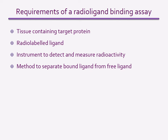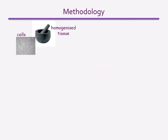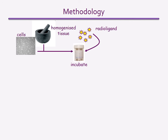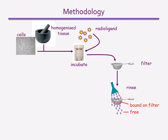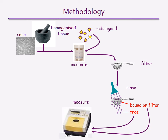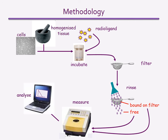The starting point can be either intact cells, homogenised tissue or isolated cell membranes. The sample is incubated for various times with the radio ligand. At the end of the incubation, the sample is passed through a filter. The solution containing the free radio ligand passes straight through, but the ligand that is bound to its target stays trapped in the filter paper. The radioactivity in the filter paper and solution are then measured separately by liquid scintillation counting, and the radioactive counts analysed to measure the kinetics of ligand target binding.